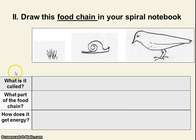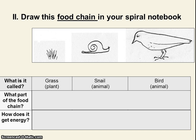Then you're going to want to write a table with some space, all the way across your page. It needs to have the following three rows: what is each of these organisms called, what part of the food chain is it, and how does it get its energy? Press pause so you have time to draw. Now I'm assuming you've had enough time — we're going to keep going and I'll go through each row. The first row: what are these organisms called? That was grass, a snail, and a bird.